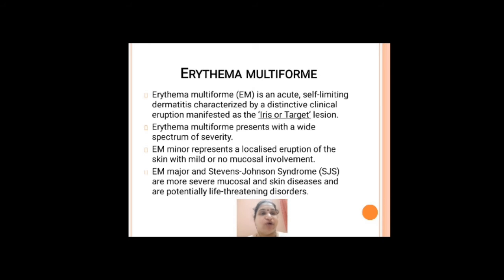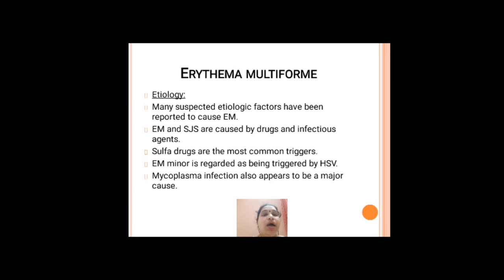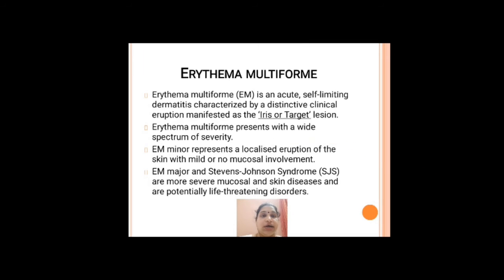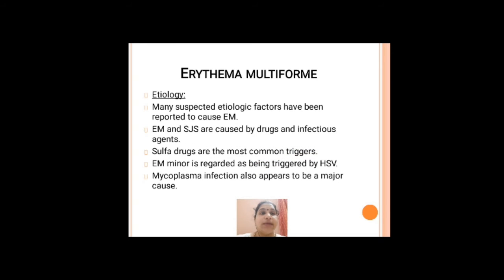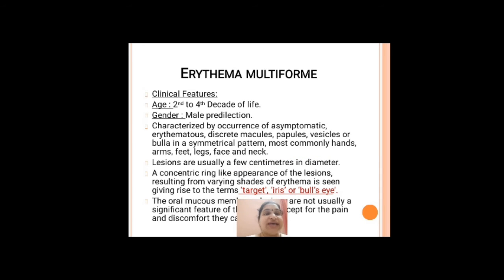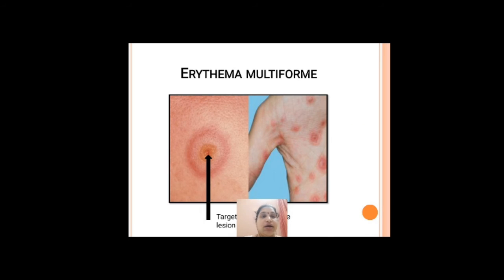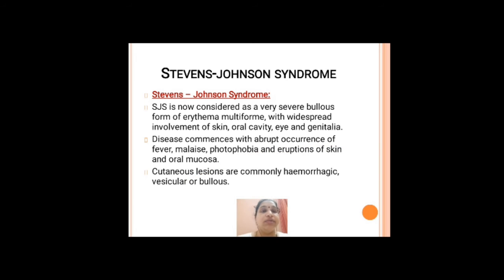The next lesion is erythema multiforme. This is also an autoimmune disorder and is an acute, self-limiting disease characterized by skin lesions called iris lesions or target lesions. There are two forms: minor and major. The minor form is usually triggered by a virus like HSV; the major form is caused by drugs and infectious agents. The lesions contain erythematous macules or papules with a concentric ring-like appearance and varying shades of erythema, resembling a bull's eye or target lesion.